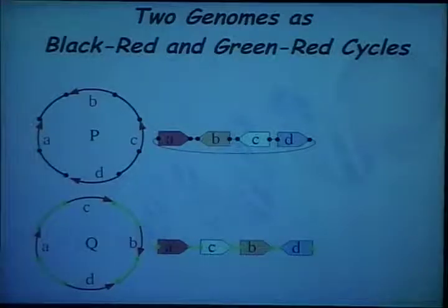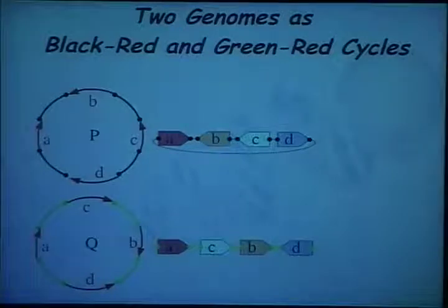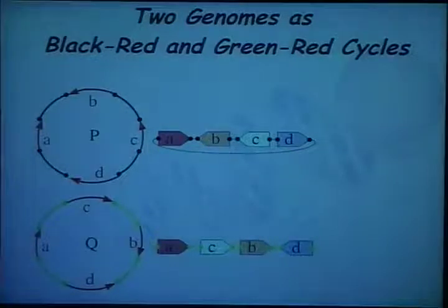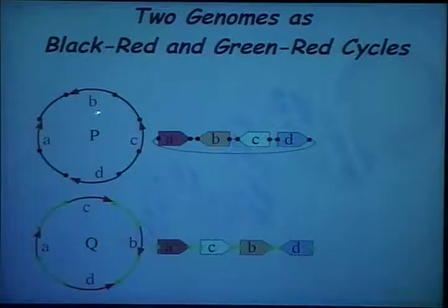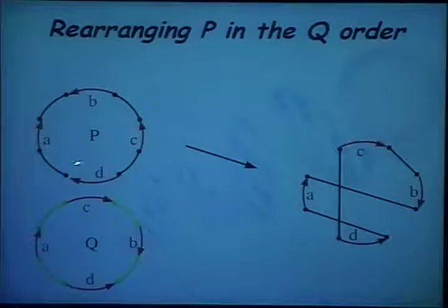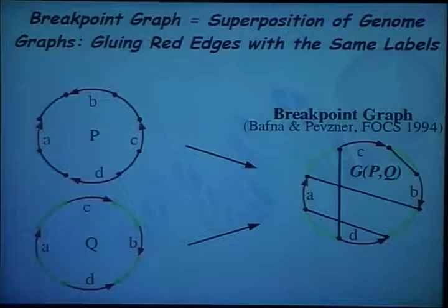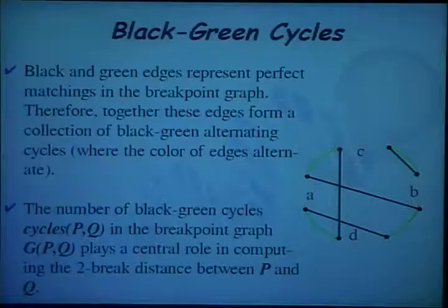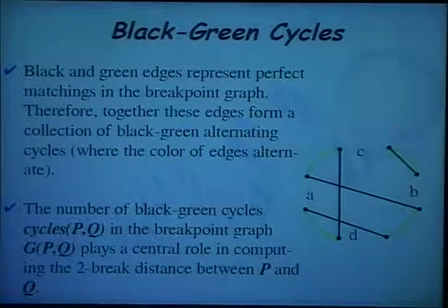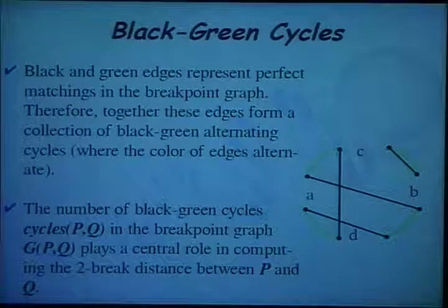Suppose you have two genomes on the same set of blocks. One genome is represented as a black-red graph, and the other genome is represented as a green-red graph. Red edges are labeled the same in the two graphs, but the adjacencies are different — black edges differ from green edges in the second graph. Reordering the red edges in the order defined by the second genome, and overlaying the green edges, we get what is called the breakpoint graph. From now on, I will be interested only in black and green edges representing adjacencies in one genome and in the other. Both sets of edges form a perfect matching, so together they form a collection of cycles.